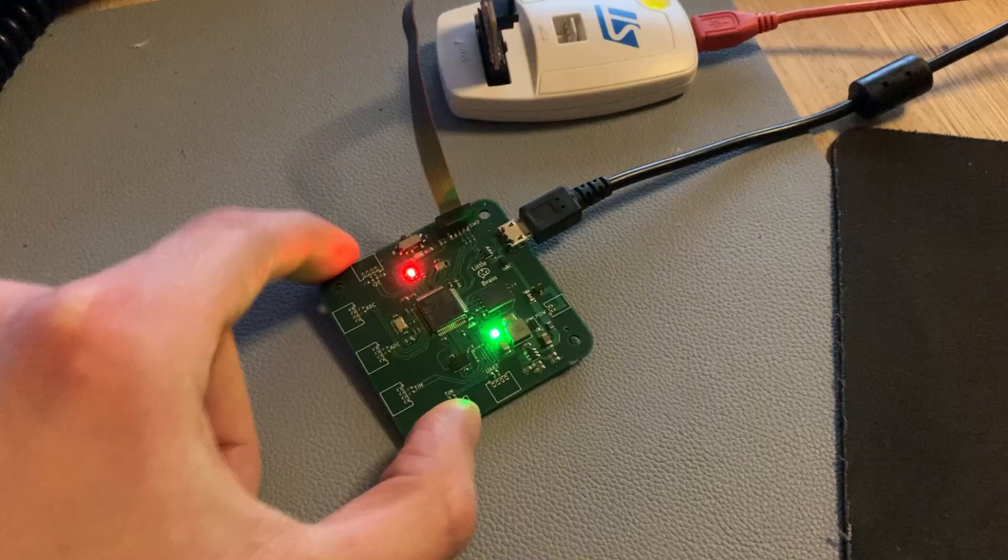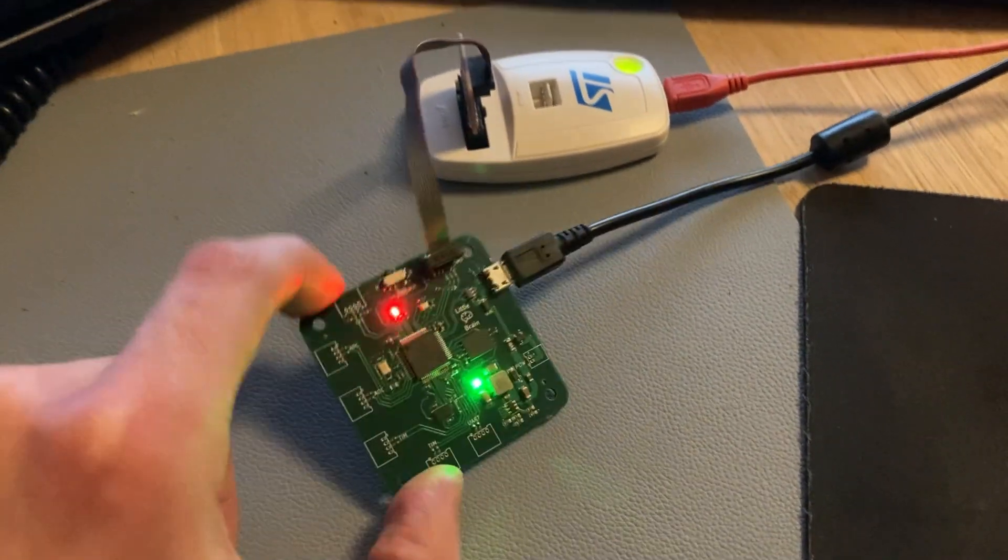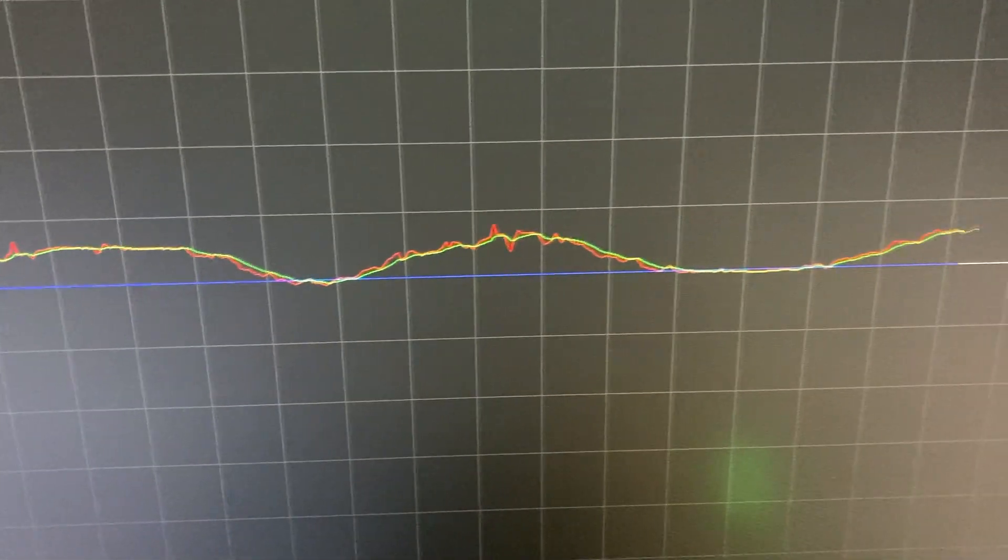I've got the code running which is filtering accelerometer data and then feeding that back through a virtual COM port on my computer. And here you can see the result. So the red line is the raw accelerometer data.